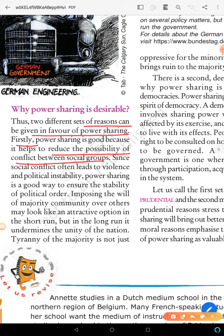We had already taken this topic yesterday but I am repeating it. Conflict between social groups leads to violence. Violence means danger and political instability. Power sharing is a good way to ensure stability of political power and ensure that the political order is stable.